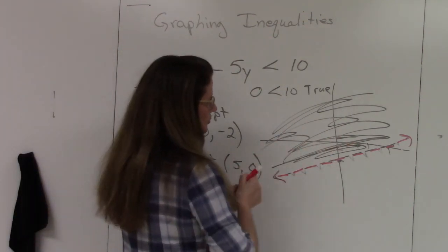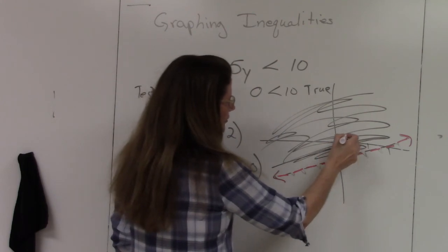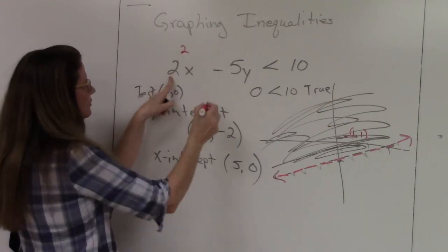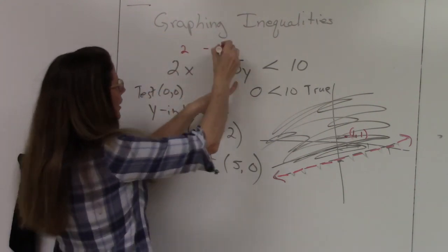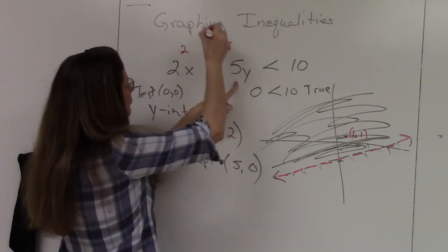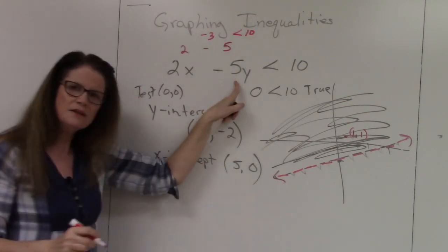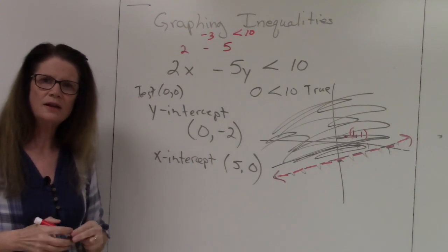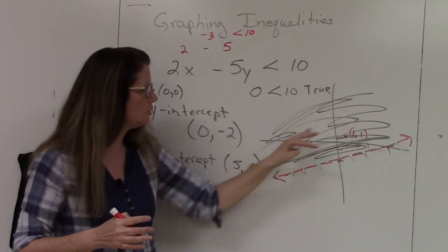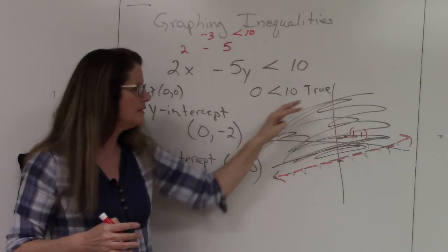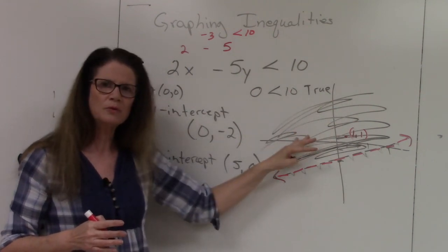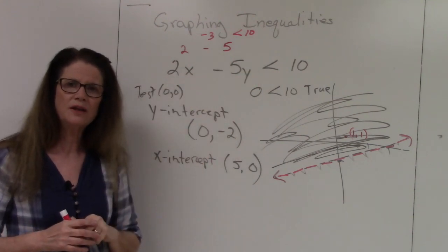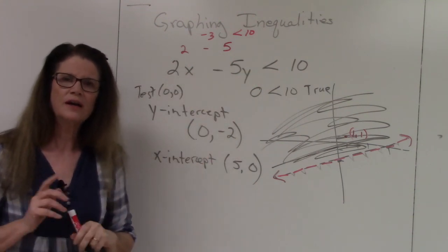To double-check, let's try the point (1, 1): 2 times 1 is 2, minus 5 times 1 is 5, so 2 minus 5 equals negative 3, and negative 3 is less than 10 — true. This upper region is called the feasible region, meaning any point within it will satisfy or be a solution to this inequality. That's how you graph inequalities.